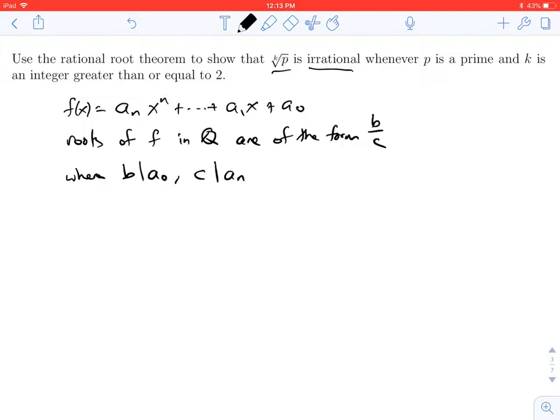So let's first make an observation. The k-th root of p is a root of g(x). So if I have a k-th root, I get rid of it by raising something to the k-th power. If I raise the k-th root of p to the k-th power, I get p.